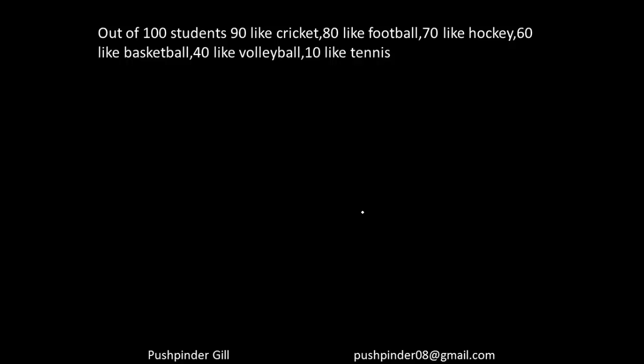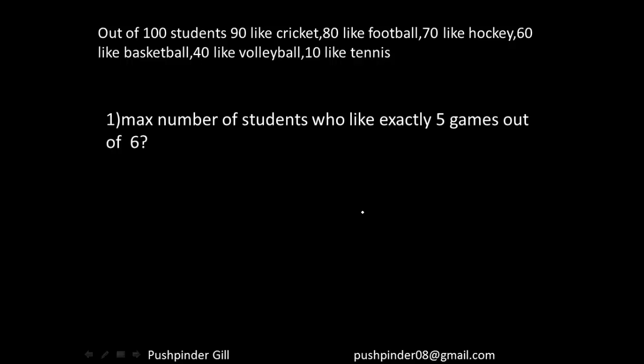There are a lot of permutations and combinations in which things can happen. There will be people who like only cricket and football, people who like only hockey and basketball, people who like exactly 3 or exactly 4, and so on. You don't have to fall for that trap — you just see what the question is asking. Now let's pick up one of the questions: find the maximum number of students who like exactly 5 out of 6 games.